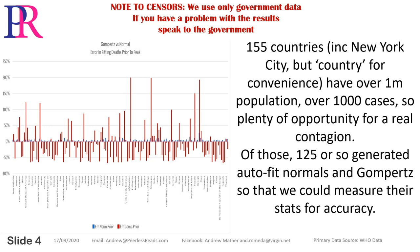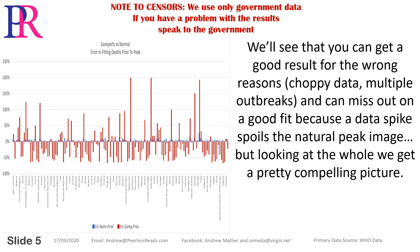155 countries including New York City have over 1 million population, so plenty of opportunity for a real contagion. Of those, 125 or so generated auto-fit normals and Gompertz curves so that we could measure their stats for accuracy. We'll see that you can get a good result for the wrong reasons — choppy data, multiple outbreaks — and can miss out on a good fit because a data spike spoils the natural peak image, but looking at the whole we get a pretty compelling picture.